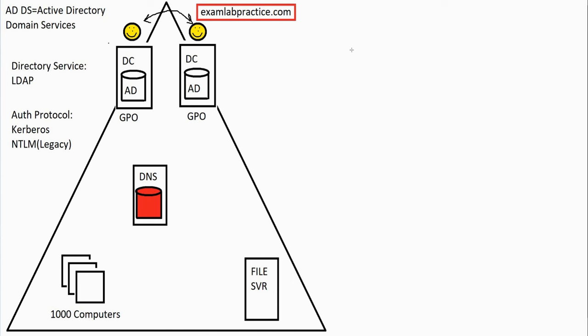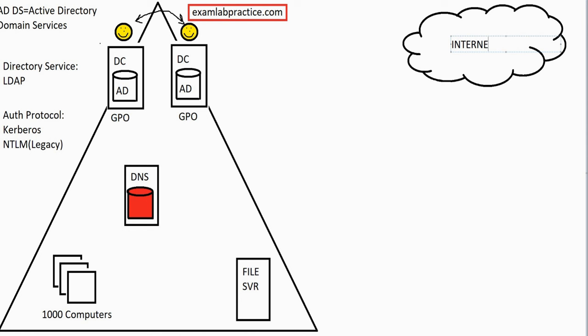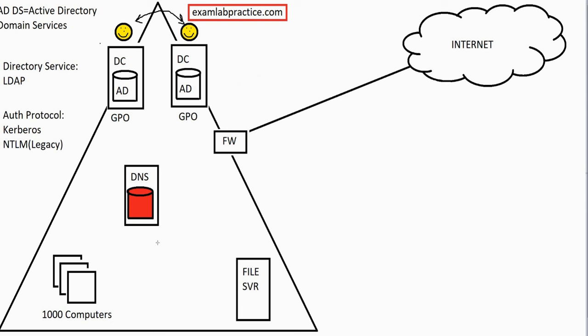Let's throw the internet into the mix. You don't want to leave your internal network exposed, so your company would generally have a firewall. This gives you a secure way for traffic to flow out to the internet, and you can control what comes in through that firewall. This is a traditional domain — the way we've done things for 20 years.